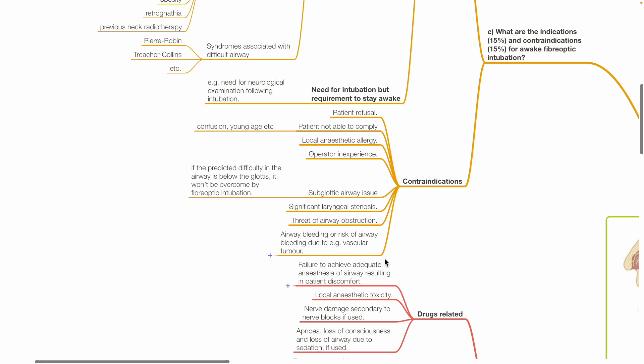Contraindications for awake fibro-optic intubation includes patient refusal, non-compliant patient such as the confused or young age patient, local anesthetic allergy, operator inexperience, subglottic airway issue. If the predicted difficulty in airway is below the glottis, it won't be overcome by fibro-optic intubation, significant laryngostenosis, threat of airway obstruction, airway bleeding or risk of airway bleeding, for example due to vascular tumor.